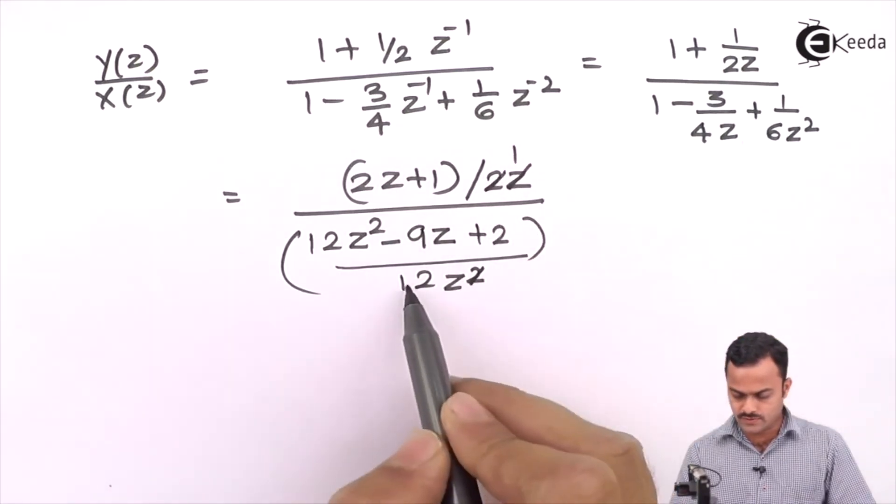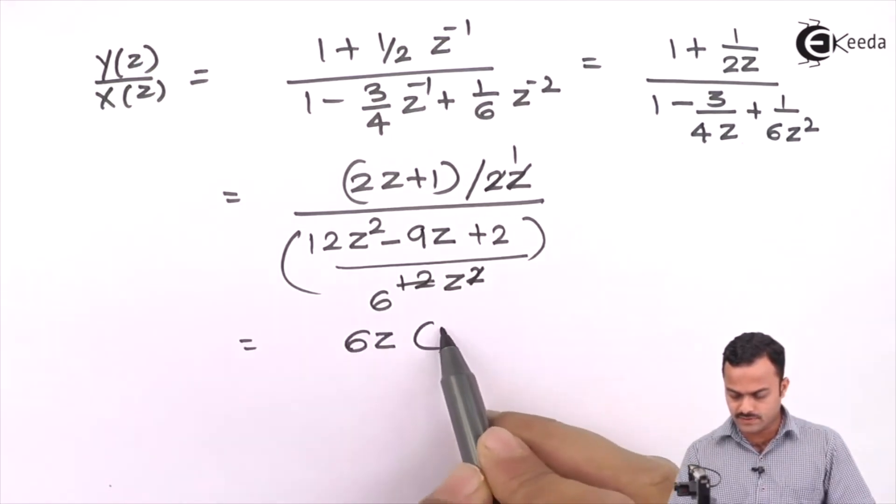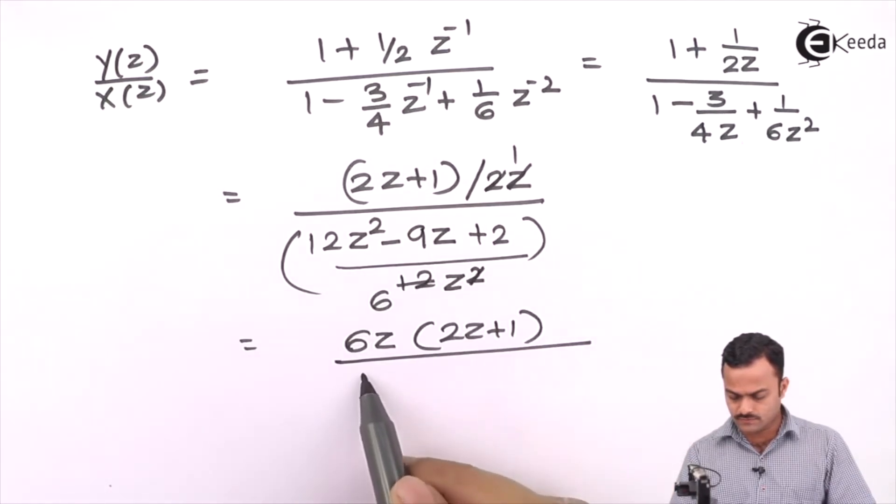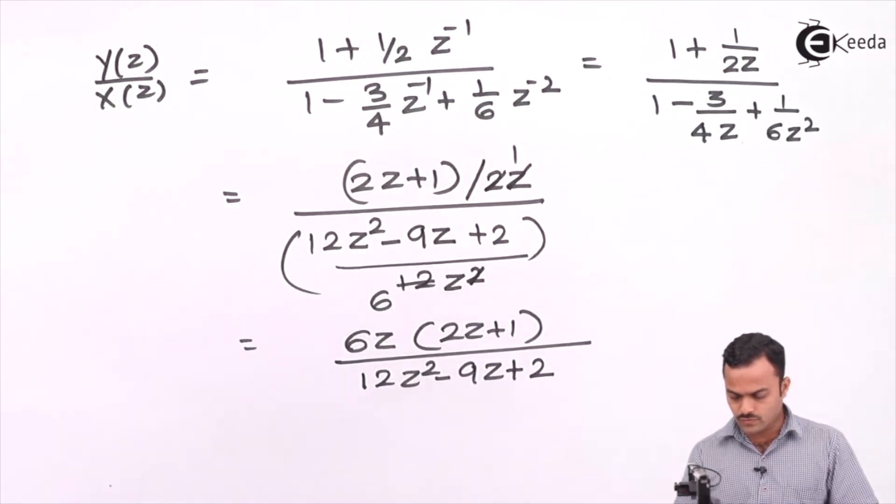And this 2 will also cancel to make it 6z which will go up. In the end it will be 6z(2z + 1) upon (12z^2 - 9z + 2).